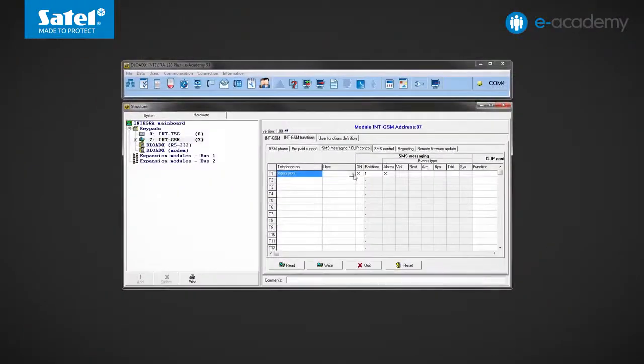Now, from the list of available users, I choose the one that will be associated with the phone number entered. Next, I go to the SMS control tab.